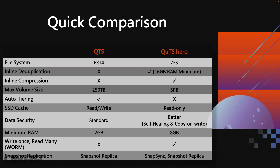Both operating systems have snapshot replication — we call it Snapshot Replica — but they're not compatible with each other. You can only do Snapshot Replica from QTS to QTS, or QUTS Hero to QUTS Hero, simply because the file systems are different. However, QUTS Hero brings an extra function called SnapSync, which is like Snapshot Replica but much better. It has real-time options, and most people using QUTS Hero would use SnapSync — it's a much better way to replicate snapshots from one NAS to another.